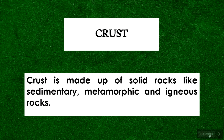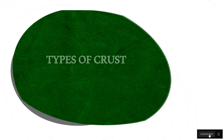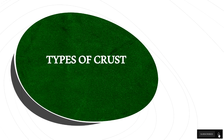How about crust, or crust plate? Crust is made up of solid rocks like sedimentary, metamorphic, and igneous rock. There are two types of crust plate: continental crust and oceanic crust.